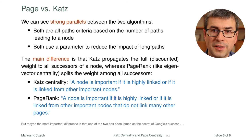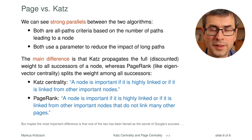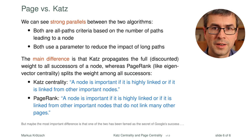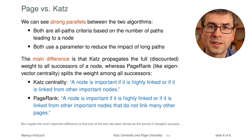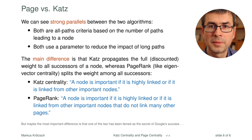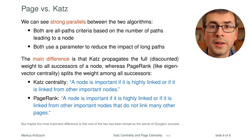We can phrase it as: in Katz centrality, a node is important if it is highly linked or linked from other important nodes. In PageRank, a node is important if it is highly linked or linked from other important nodes that do not link many other pages — if it gets the full attention of other important nodes. PageRank may be more useful for the web, but Katz is meaningful in many scenarios where splitting attention doesn't make sense, such as protein interaction networks, where having many interaction partners doesn't necessarily discount the importance flowing through a node.